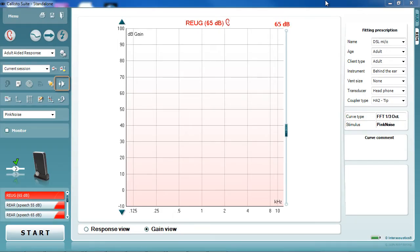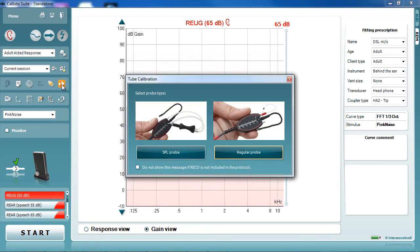Press the probe tube calibration button to start the procedure. A prompt now asks which probe is to be calibrated. The SPL probe is specific to some RECD measurements, while the regular probe is designed for all other in situ measurements. We select the regular probe.